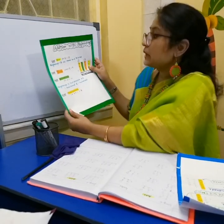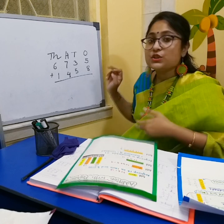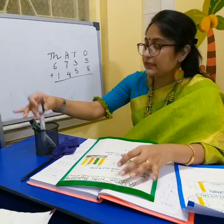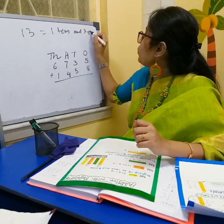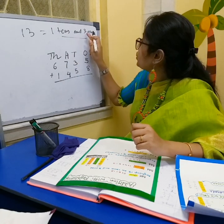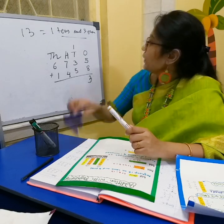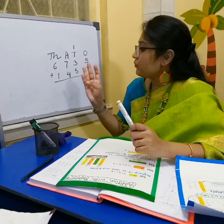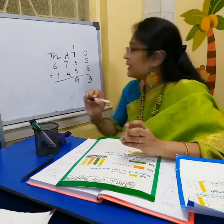Add the ones column first. Here we have 5 and 8. 5 plus 8 equals 13, which we regroup as 1 ten and 3 ones. So we write 3 in the ones place and carry 1 to the top of the tens column. Now we add the tens column: 3 plus 5 equals 8, and 8 plus 1 carried equals 9. No regrouping needed because it is less than 10, so we write 9.